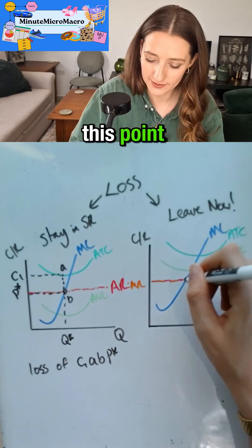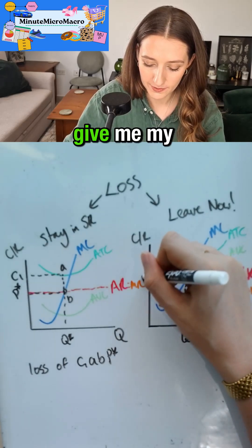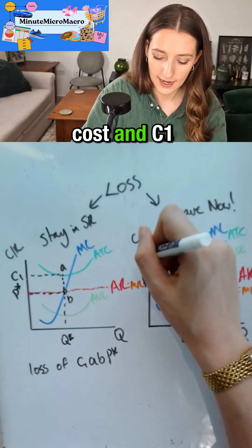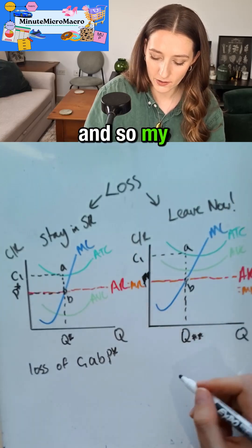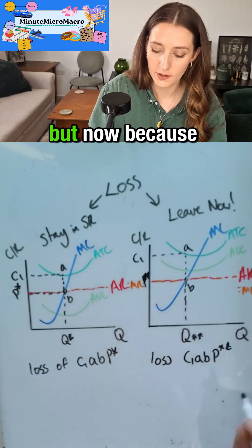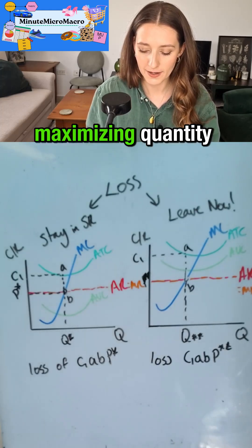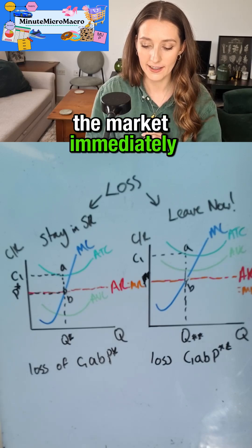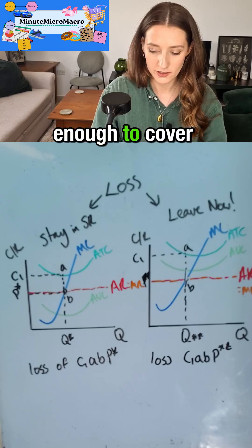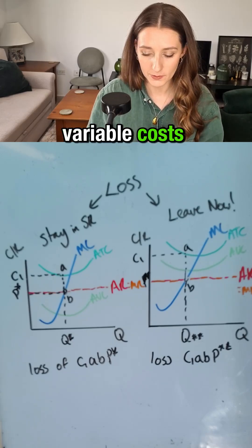When should I leave? Right now marginal cost equals marginal revenue at this point — that's my Q star star. I read off of my average revenue to give me my P star star, and I read all the way up to average total cost. My loss is still C1 A B P star star, but now because my average variable cost is greater than my average revenue at the profit maximizing quantity, I should leave the market immediately. I'm making a huge loss and I'm not even making enough to cover my variable costs, let alone any of my fixed costs.